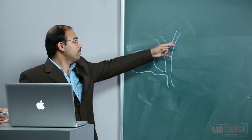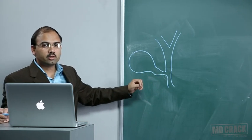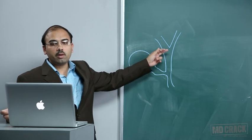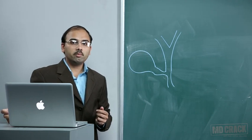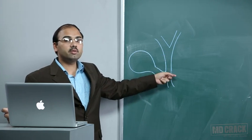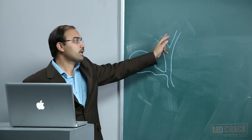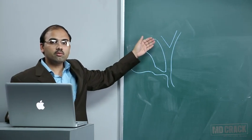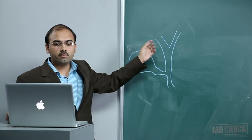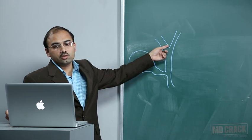Cholangiocarcinomas are classified by the Bismuth-Corlette classification. Type 1 tumors are confined to the common hepatic duct. Type 2 tumors involve the bifurcation without involvement of secondary intrahepatic ducts. Type 3a and 3b depict extension along the right or left hepatic duct respectively. Type 4 tumors involve both hepatic ducts along with the common hepatic duct portion.